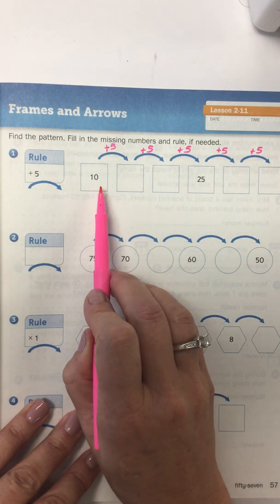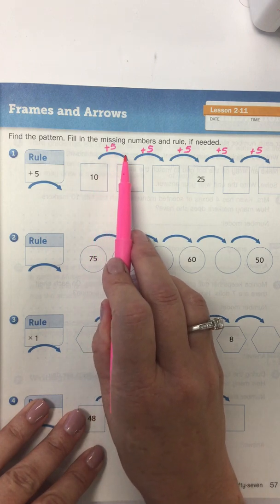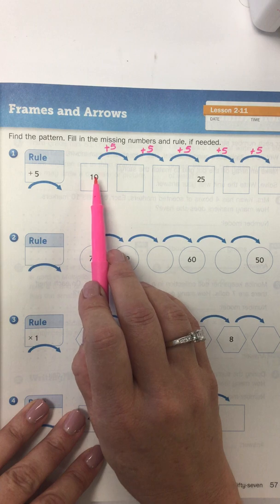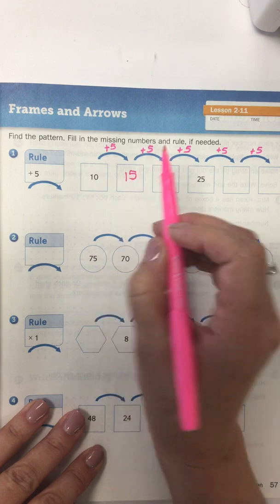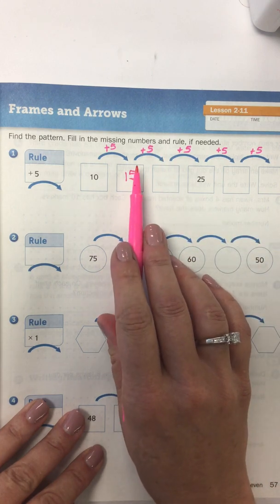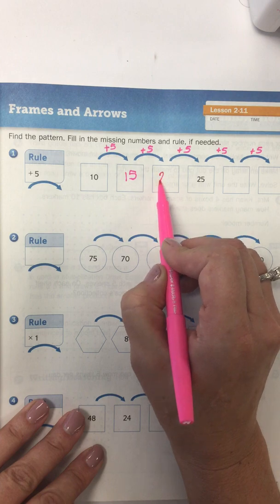This is my starting box, and if I move in this direction, my rule is to add five, and so I'm going to start with 10 in this box, add five, and my answer will be 15. If I'm at 15 and my rule is to add five, then my answer is 20.